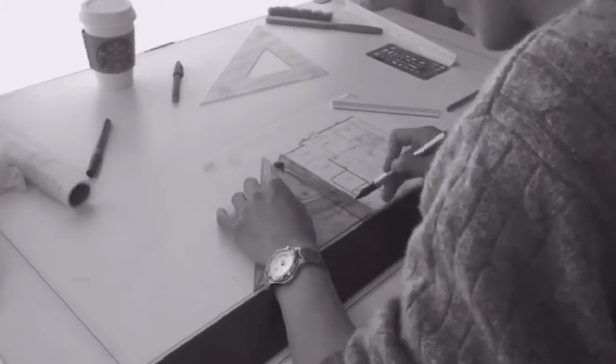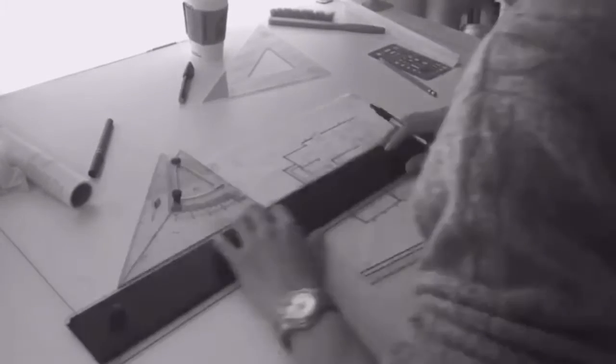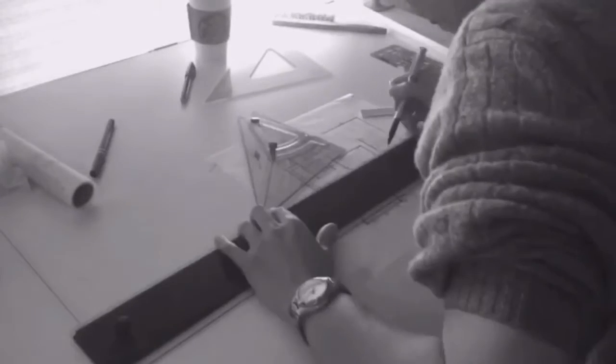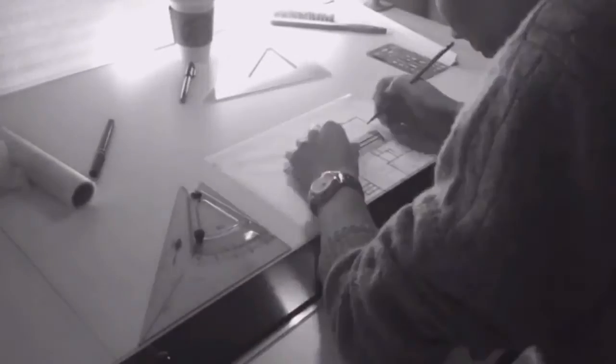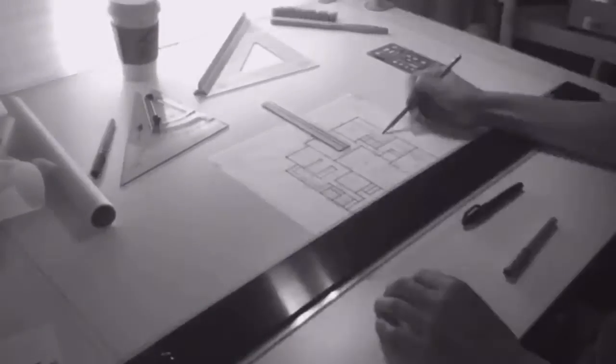An architect is a person who designs buildings and prepares plans to give to a builder, like a construction worker. Architects decide the size, shape, and what the building will be made from. Architects need to be good at math and drawing. They need an imagination.